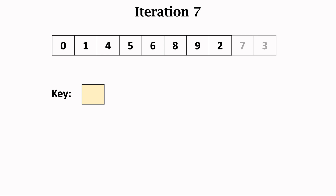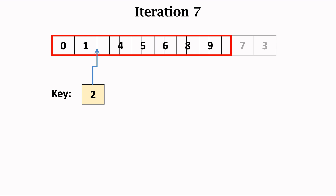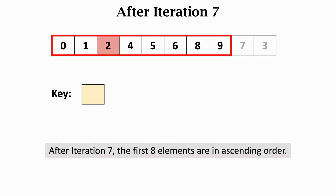Then the seventh iteration. We work on the first eight elements. Take the rightmost element, 2, out of the subarray and let 2 be the key. By comparing the key with the remaining elements, we find the position for inserting the key. Move the elements bigger than the key one step rightward to make a room. Then insert the key into the vacant position. After the seventh iteration, the first eight elements are in ascending order.